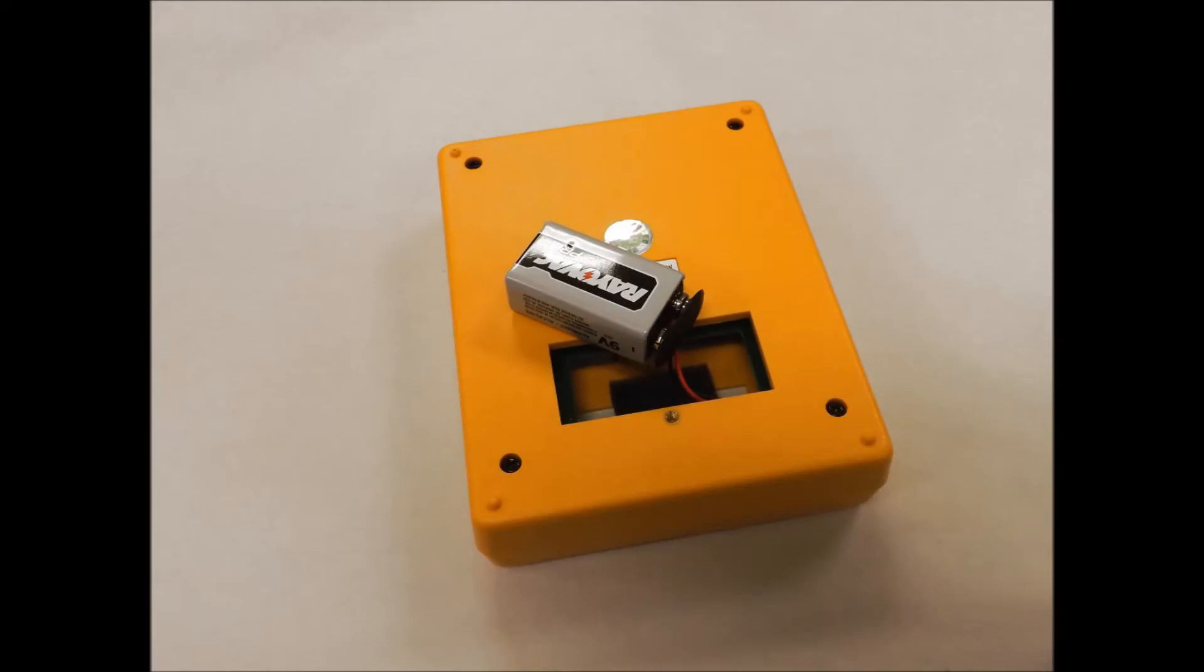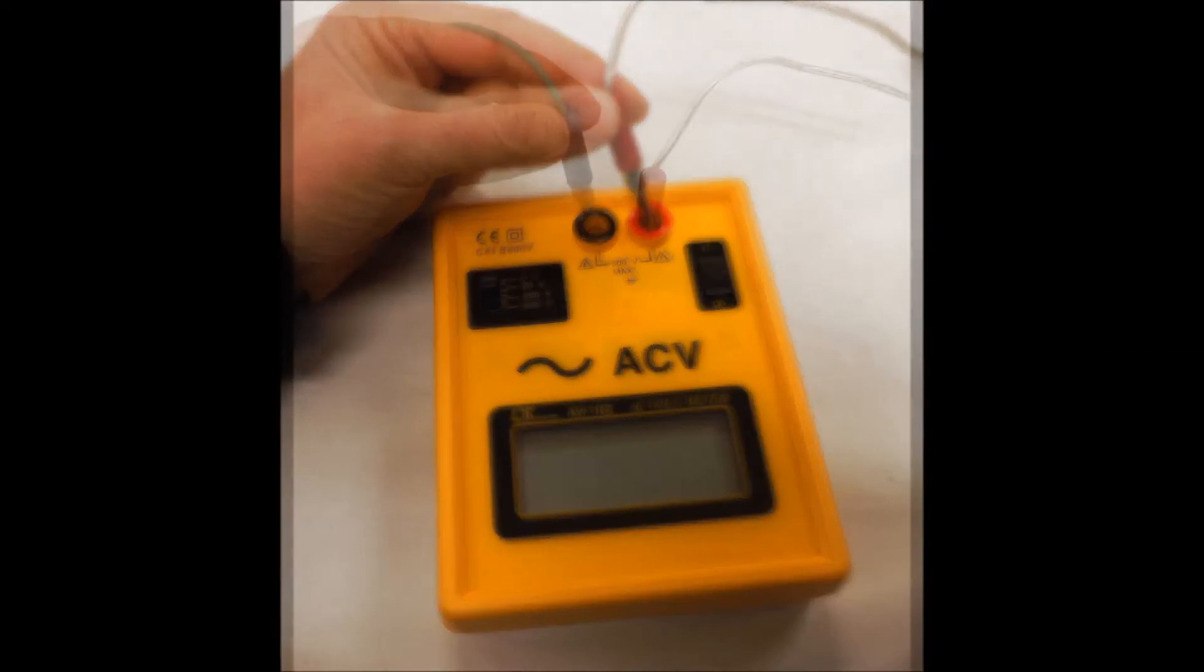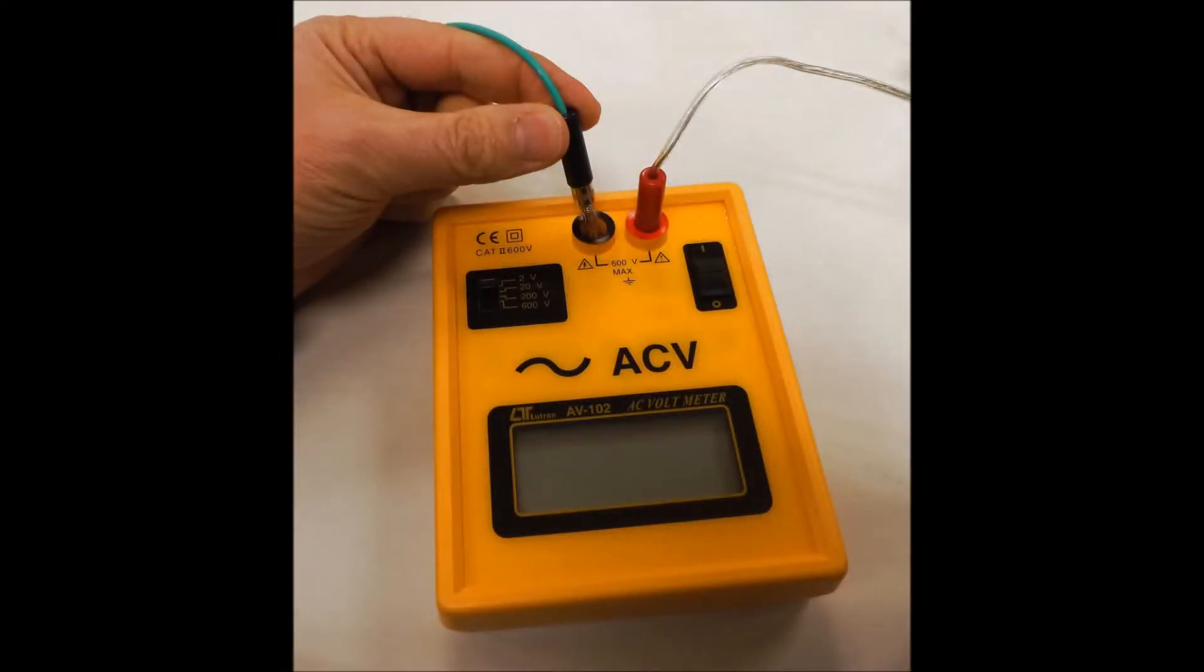Next, insert the red banana plug from the sensor handle into the red socket on the meter. Insert the black banana plug from the ground cord into the black socket on the meter.